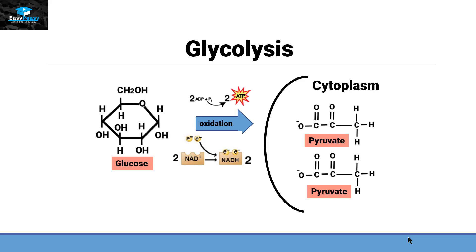The conversion of glucose into pyruvate is an oxidative reaction because when glucose is degraded into pyruvate it releases electrons. These electrons will be taken by NAD+ and converted into NADH, so that reaction is a reduction reaction.